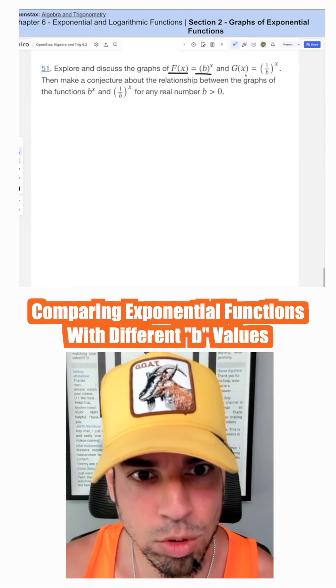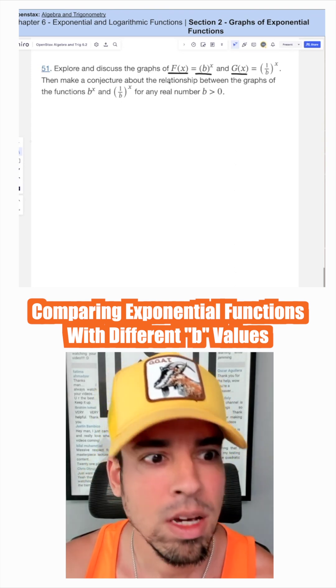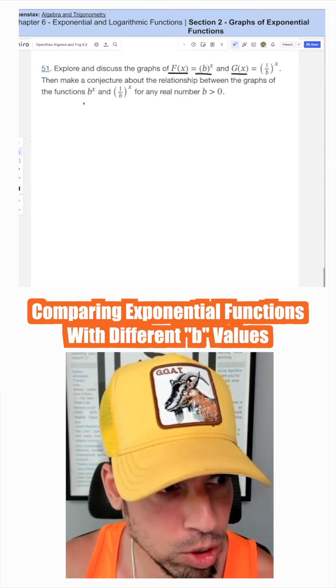Explore and discuss the graphs of f of x equals b to the x and g of x equals 1 over b to the x. Make a conjecture about the relationship between these two graphs.